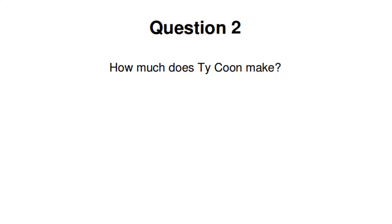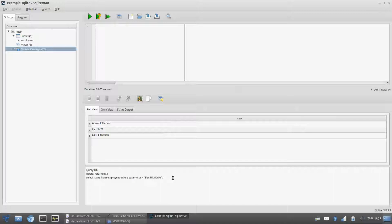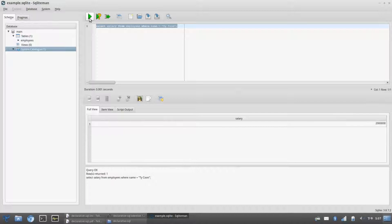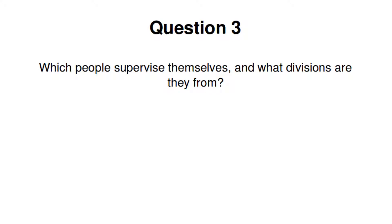How much does Tycoon make? We want the salary from the employees table where the employee is named Tycoon. There's only one of them, and SQL tells us that Tycoon makes two million.